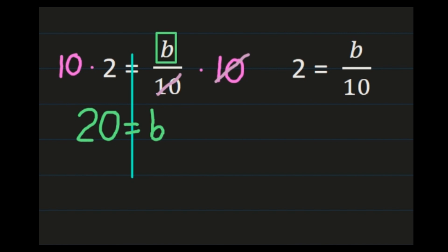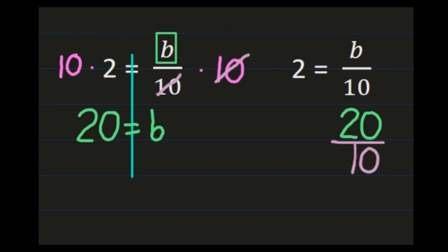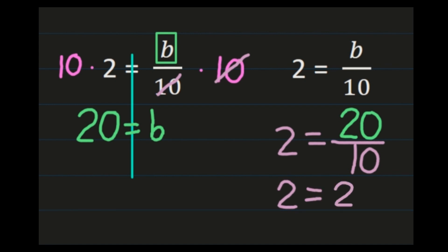We check our work again. We found b equals 20, so we substitute 20 for b and need to confirm we get an answer of 2. So we have 20 over 10 equals 2. Since 20 divided by 10 is 2, we get 2 equals 2 — a true statement. Our answer of b equals 20 is correct.